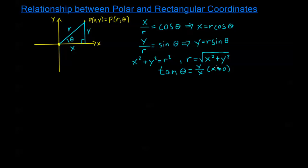If x equals zero, we don't use the tangent formula. When converting from rectangular to polar and x is zero, a positive y corresponds to θ = π/2, and a negative y corresponds to θ = 3π/2. So x = 0 is actually a simple case. The rest of the time we use tan θ = y/x.